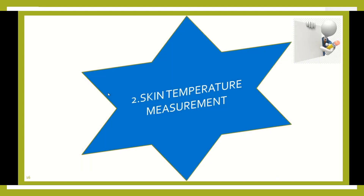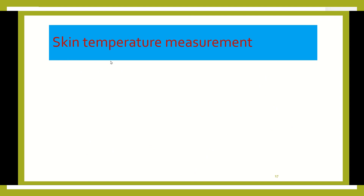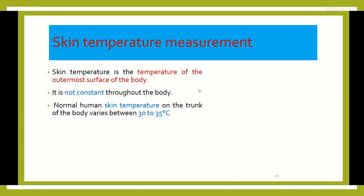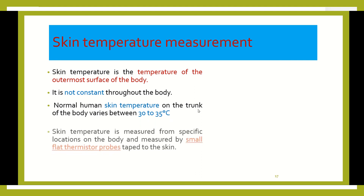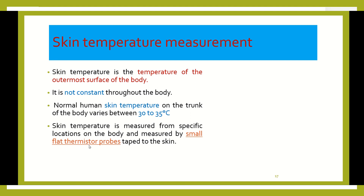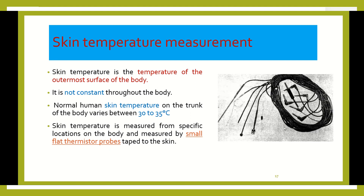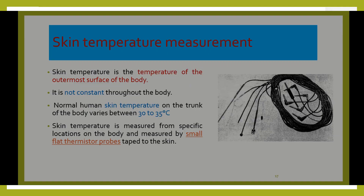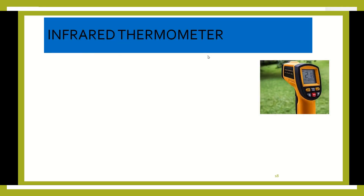We have now discussed systematic body temperature measurement and the devices used. Let us move to skin temperature measurement. Skin temperature arises from the skin surface and is also called surface temperature. It is not constant throughout the body; normally, skin temperature varies from 30 to 35 degrees centigrade. To measure skin temperature, we can use small flat thermistor probes.